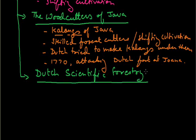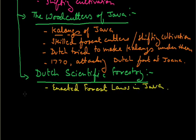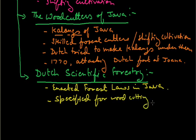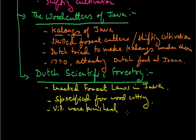The Dutch Scientific Forestry: as like in India by the British, the Dutch also enacted forest laws in Java, restricting village access to the forest. Wood could only be cut in specified areas which the villages were allowed to use. If villagers were found grazing cattle in young stands, transporting wood without permission, or travelling on forest roads with horse carts or cattle, they were punished by the Dutch government.